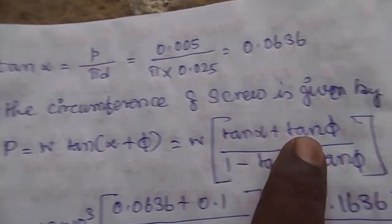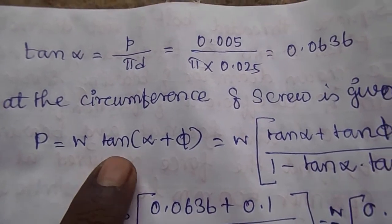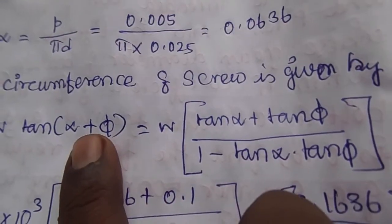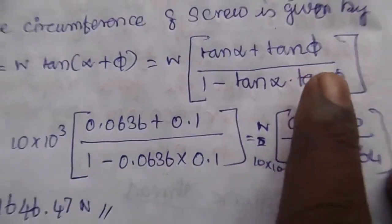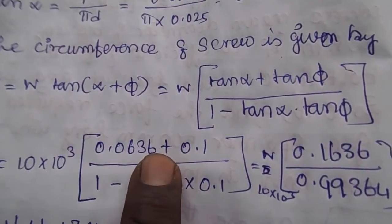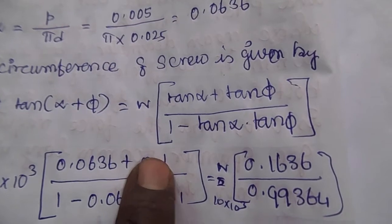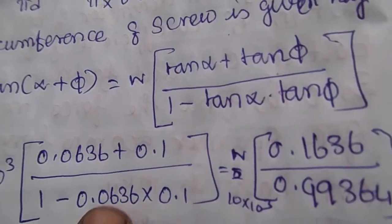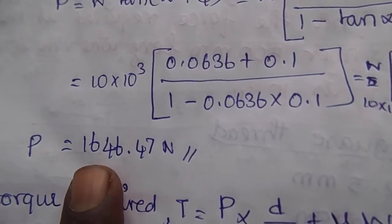The circumference of the screw is given by pi times D. Using the formula for tangential force at the screw, with the coefficient of friction 0.1, the calculated value comes out to be 1646.47 N.